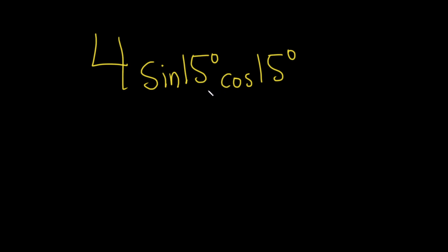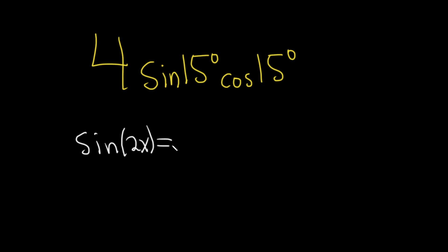The first thing you should notice is that you have a sine times a cosine. And if you notice that, you might also remember that there is a very powerful identity that says the sine of 2x is the same thing as 2 sine x cosine x. This is a very powerful trigonometric identity.